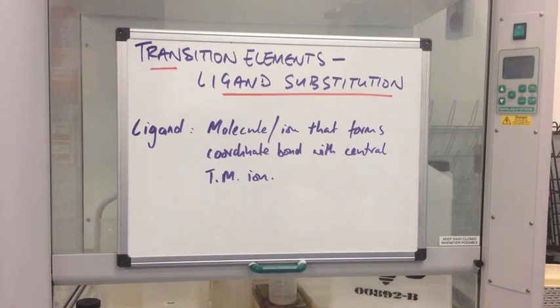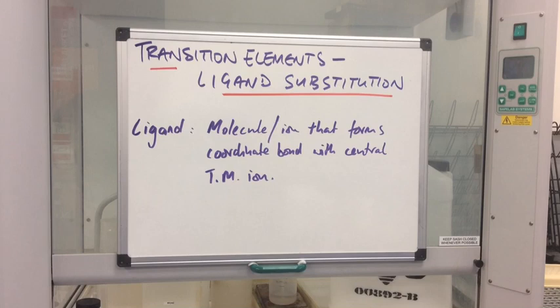In this video we're going to look at the ligand substitution reactions of the transition elements, using only the ones you need to know for the OCR exam. To start with, we'll just remind ourselves of the definition for a ligand. They are molecules or ions that form coordinate bonds, or dative covalent bonds, with a central transition metal ion, and they can do this because they possess a lone pair of electrons.